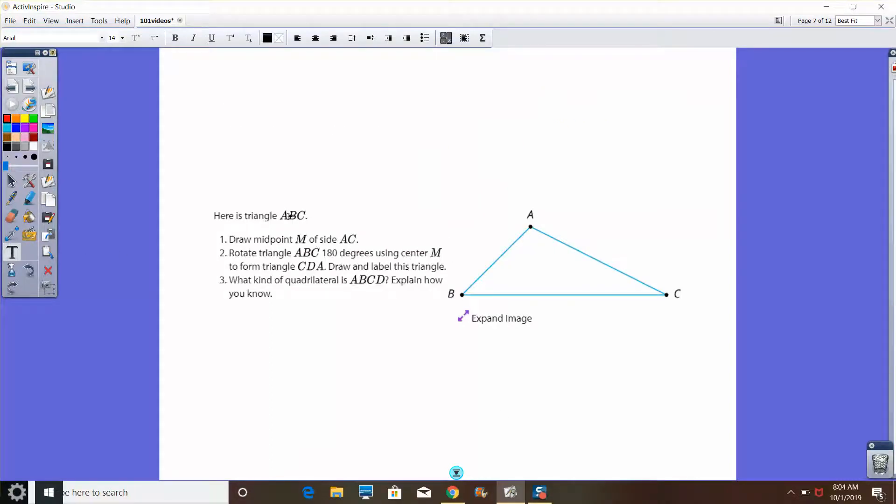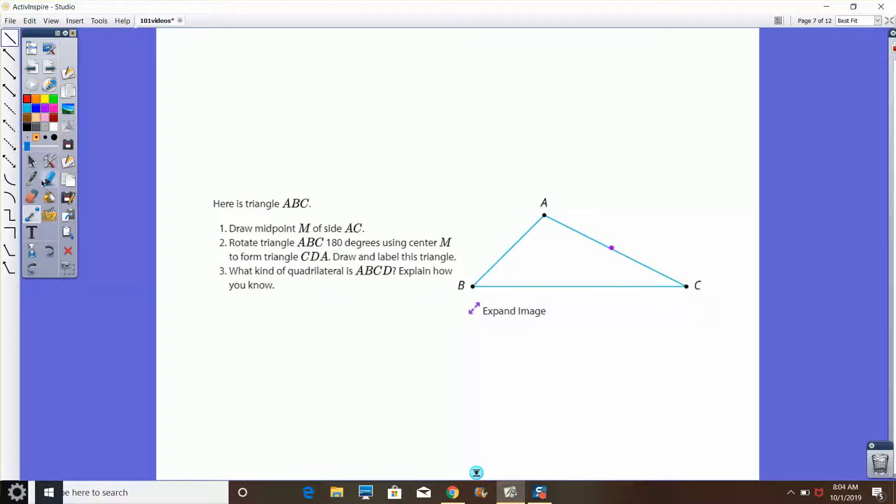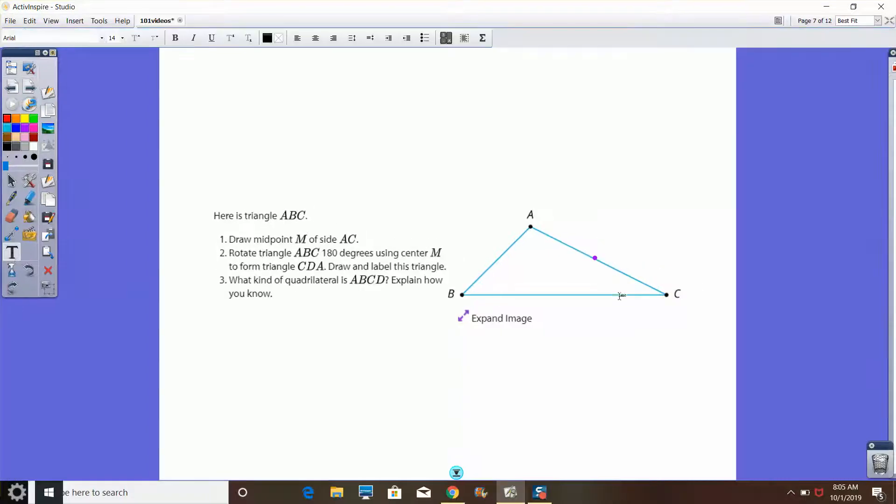Now, here we have another triangle ABC. Our job here is to draw midpoint M on side AC. You may say, what's a midpoint? Well, a midpoint is a point that is in the middle of a line. So, AC, if I measure this and put a point right in the middle, that would be my midpoint. So I'm going to label this point M. Now, here's the hard part. We're going to rotate this triangle 180 degrees using center M to form a new triangle CDA. We're going to label the new point D instead of B.